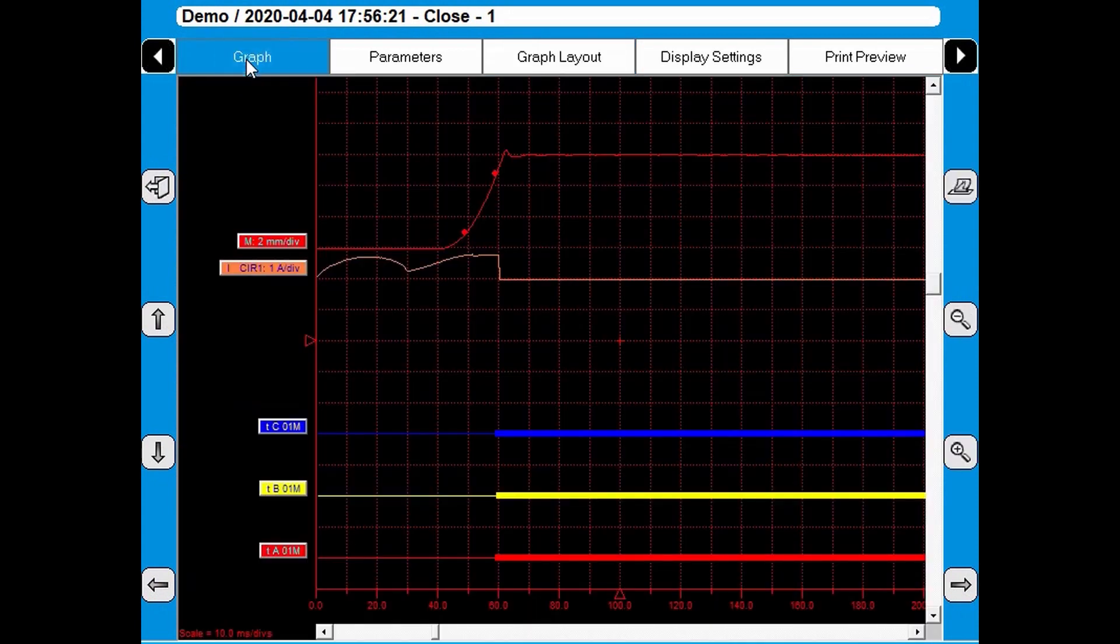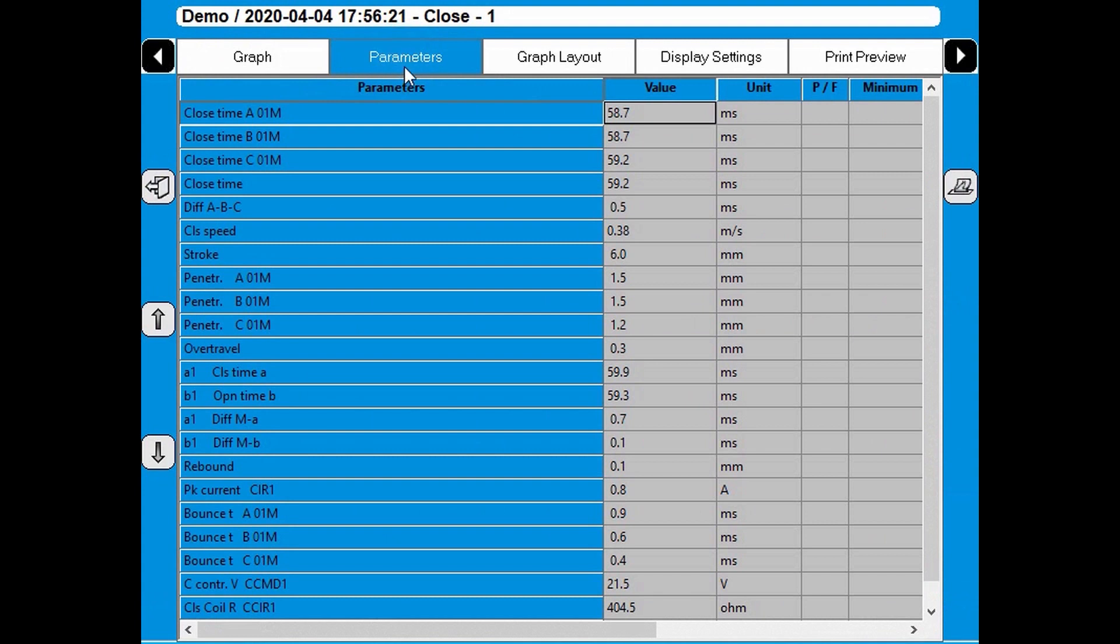I go back to graph. And now I can look at the timings, the coil current and the motion. Under parameters I can see my results. And I can see that the timing was 59 milliseconds.